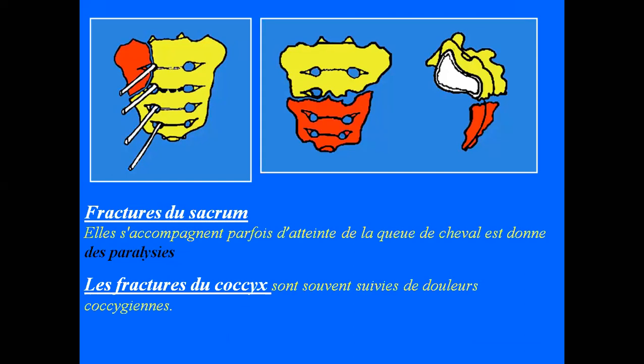Des lésions un peu plus sérieuses sont les fractures du sacrum, qui s'accompagnent parfois d'atteintes des racines nerveuses de la queue de cheval, donnant des paralysies partielles ou totales du membre inférieur. On rajoute aux fractures parcellaires les fractures du coccyx, souvent bénignes mais très douloureuses, responsables de douleurs chroniques en position assise. La fracture la plus grave dans ce groupe reste la lésion du sacrum, pouvant induire des troubles neurologiques définitifs.